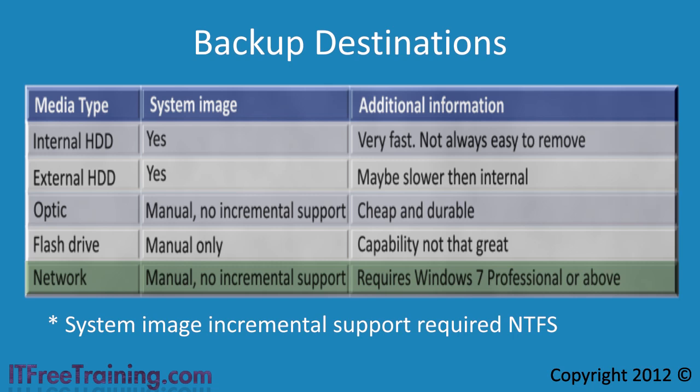Media like hard disks can store multiple system images in one file, giving multiple backups to restore from. In order to use Backup and Restore to a network location, you need to be running Windows 7 Professional or above. Regardless of which media you select, it can be any size assuming it is large enough to hold the data that you are backing up. The larger the media, the more revisions of each file that it will be able to hold.